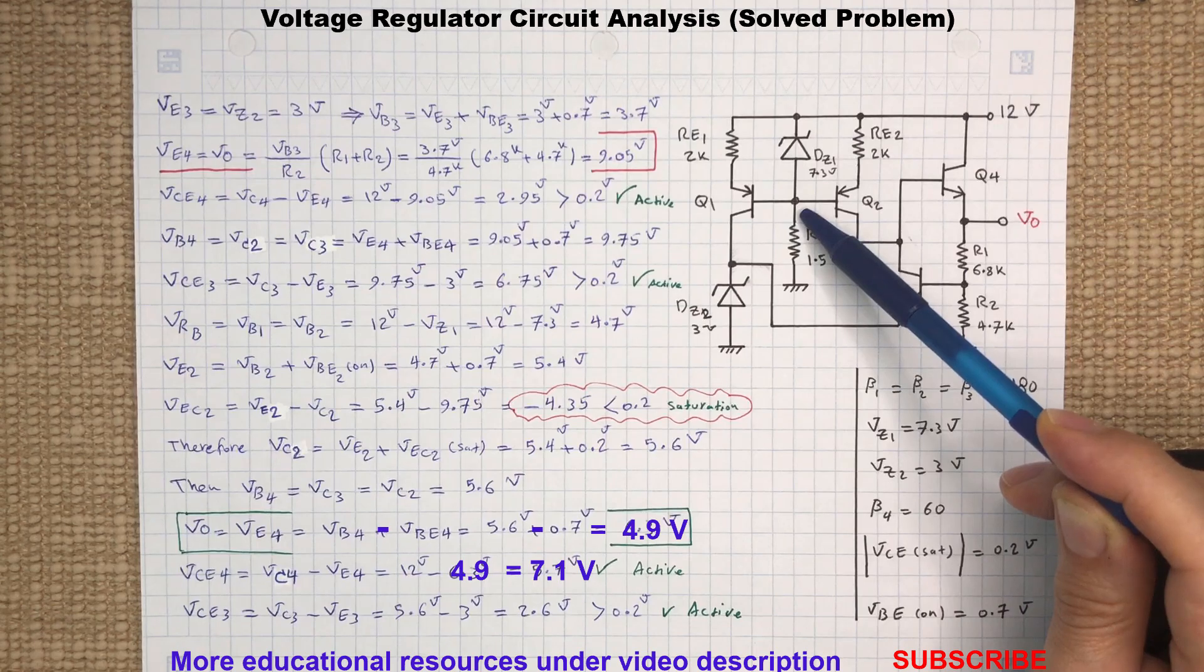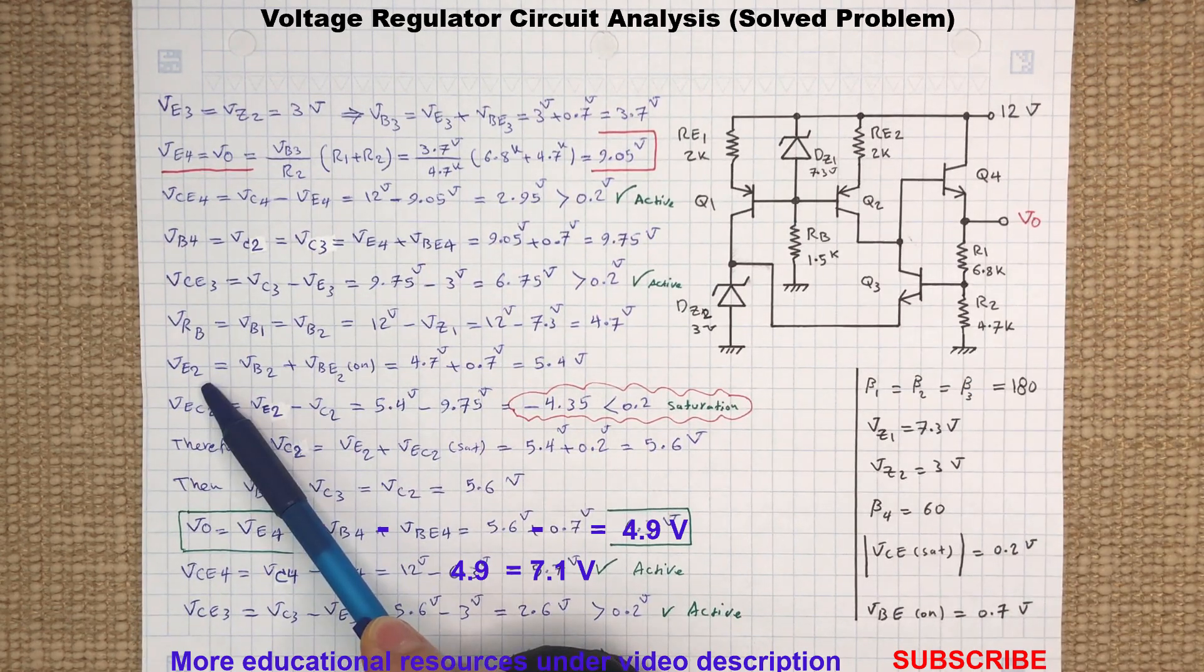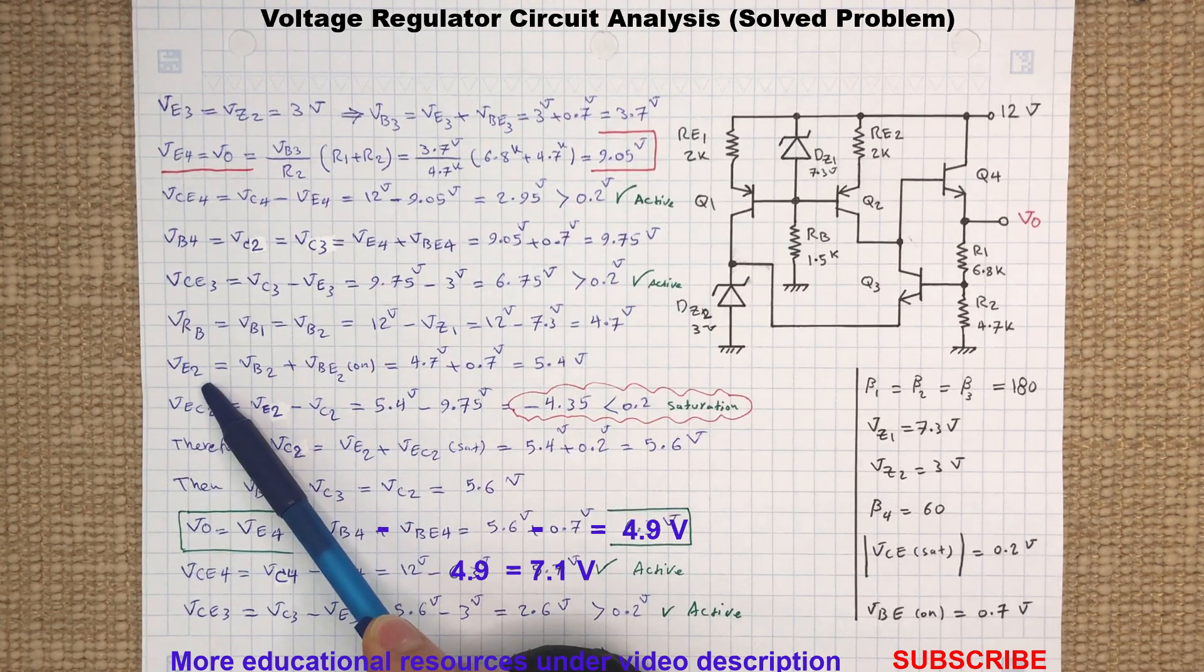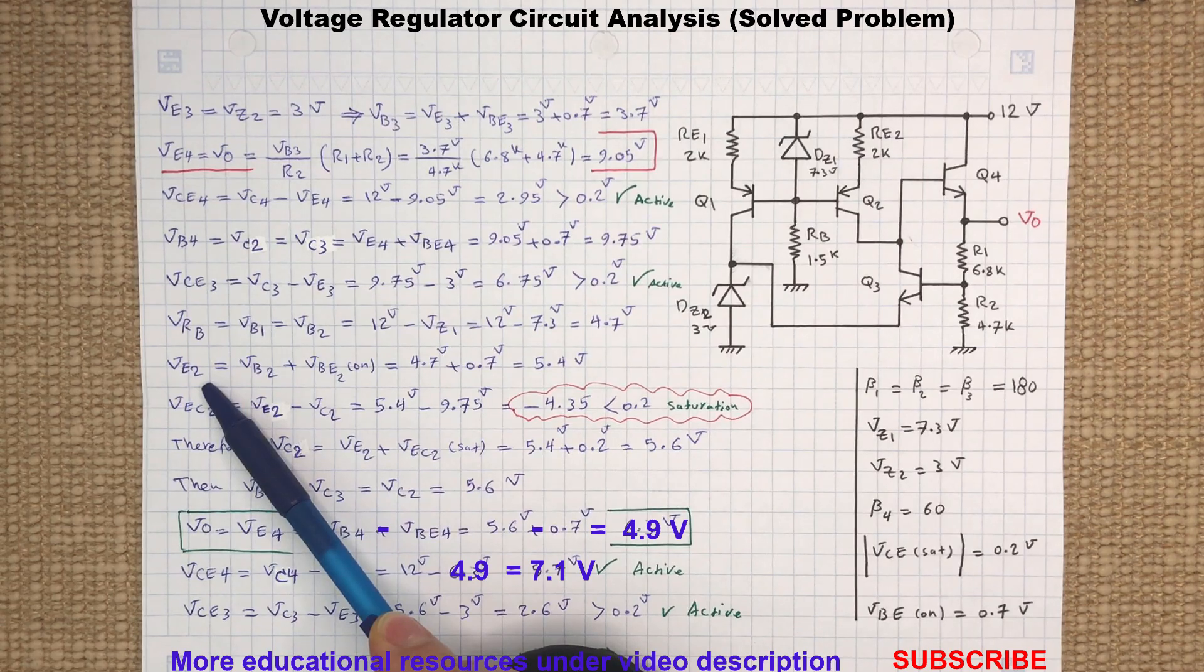So this node is at 4.7 volts, and since Q2 is a PNP transistor, the emitter voltage will be the base voltage plus the emitter-base junction voltage, which results in 5.4 volts.